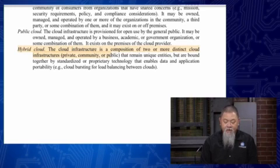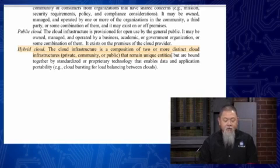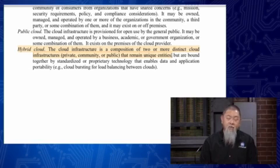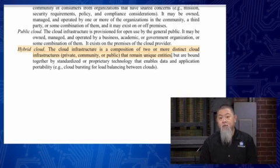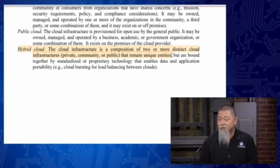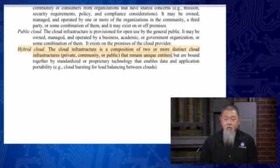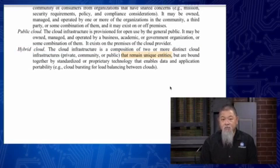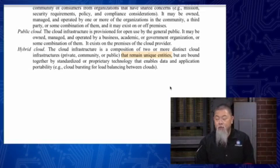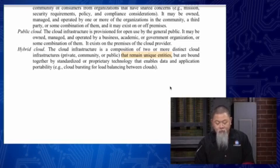Here is our last definition where we're taking a look at the idea of hybrid cloud. Cloud infrastructure is a composition of two or more distinct cloud infrastructures. That means you can have a combination of private and community cloud, or public and private cloud, or community and public. Whichever way you go about it, they're saying there are two or more distinct infrastructures — it could be all three if you wanted. But they actually remain two unique entities; we're not merging them together to make them become one technology.